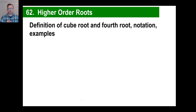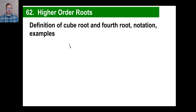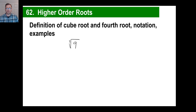Let's go to higher order roots — cube roots, fourth roots, notation, and all that. For the square root of 9, there is an understood 2 in the radical. They don't bother to write it because that's the notation for square root. You're looking for a number multiplied by itself twice that gives you that number. The answer is 3.